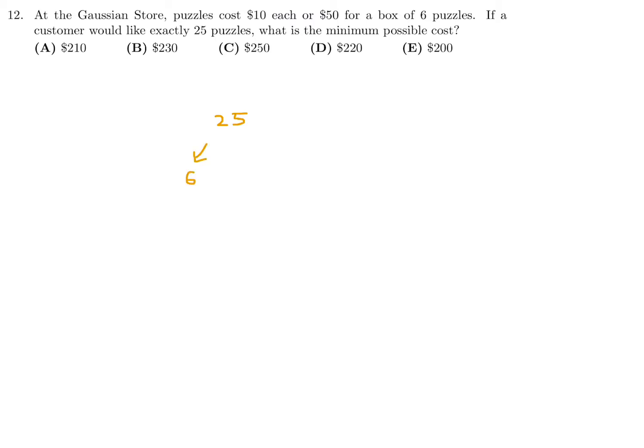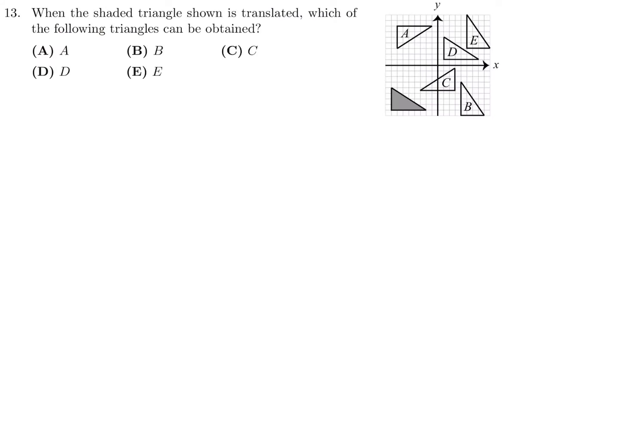We've got 25 puzzles that we need to get. I'm going to break them up into 6, 6, 6, 6, and 1. That allows me to take advantage of this $50 for a box of six because that tends to be a little cheaper - if you bought them individually, six would cost $60. So this is going to be $50, this is going to be $50, and so on, and then that individual one at the end will be $10. Now I just have to add up these guys, and when I do I get $210, and that's the cheapest minimum possible cost.